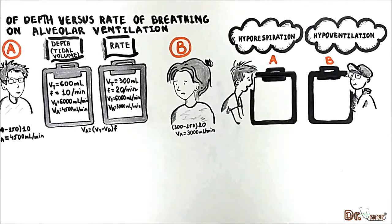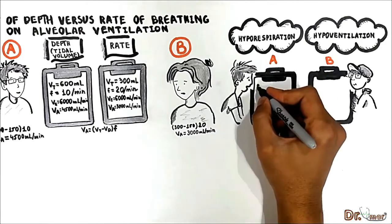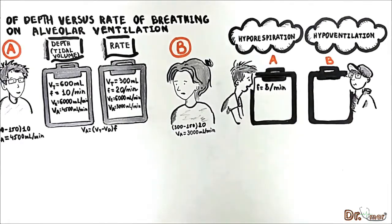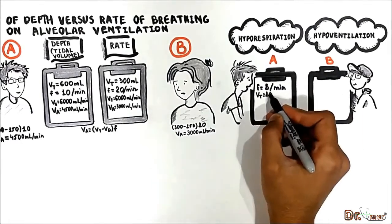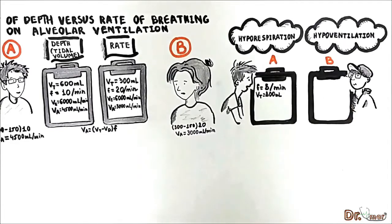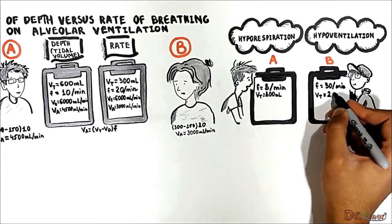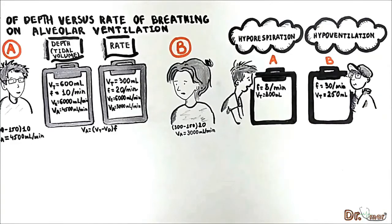Suppose Patient A has a respiratory rate of 8 and a tidal volume of 800 mL, and Patient B has a respiratory rate of 30 and a tidal volume of 250 mL. Which one is considered to have hyporespiration, and which one is hypoventilating?